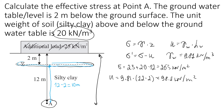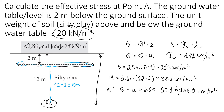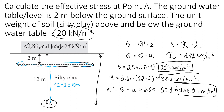Finally, effective stress equals total stress minus pore water pressure: 265 minus 98.1 gives 166.9 kN per square meter. So at point A, effective stress is 166.9 kN/m², pore water pressure is 98.1 kN/m², and total stress is 265 kN per square meter.